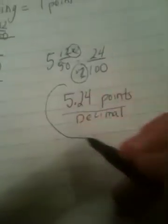as a fraction in simplest form. 5 and 6 twenty-fifths points as a fraction in simplest form. 5 and 24 hundredths as a decimal. So that's the amount of points that we earned through his passing yardage.